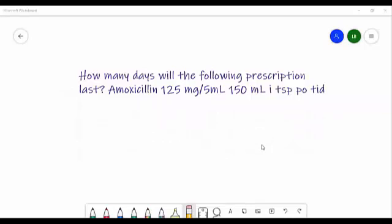Okay, so we are going to do just a couple of math problems today. We're going to start off very simple. This problem says, how many days will the following prescription last? Amoxicillin 125 milligrams per 5 mL, the total amount that the prescription has is 150 mL, and the patient is taking it one teaspoon by mouth three times a day.